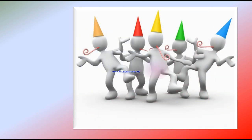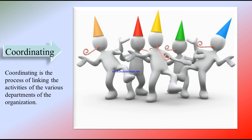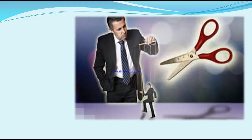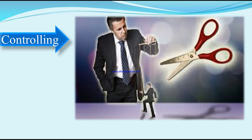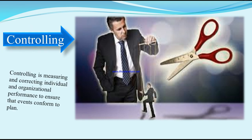In the picture we can see people rowing in the same way at the same time — this is coordinating. Coordinating means the process of linking the activities of various operational departments in the organization. And here, one person trying to control another person represents controlling — measuring and correcting individuals.